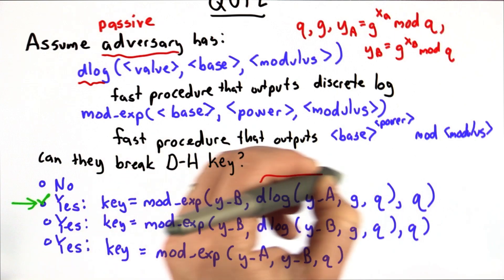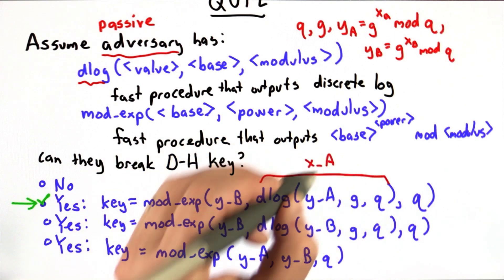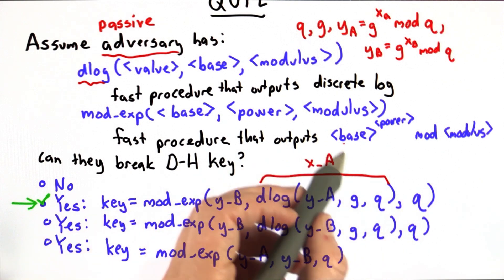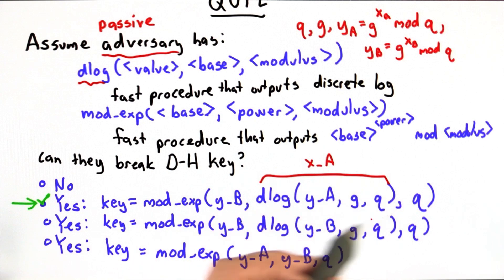And the result of this would be the x_a value that was Alice's secret, and then the adversary can compute the key the same way that Alice would. This was the only secret value, and if you had the discrete log function, you could compute that secret value.